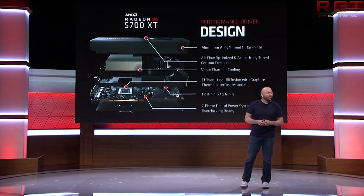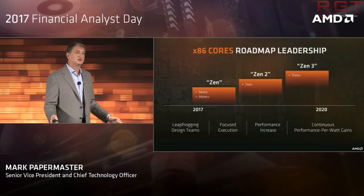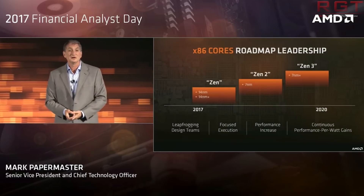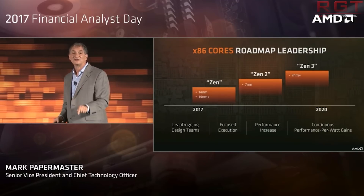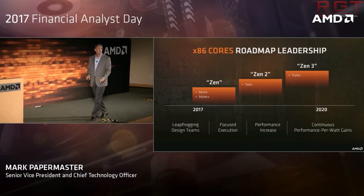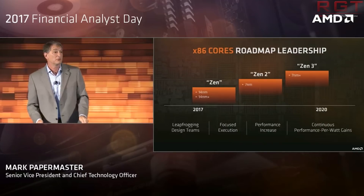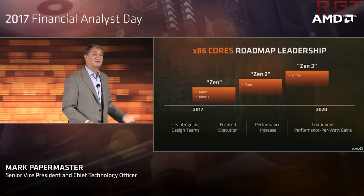Also rather fascinatingly, AMD themselves recently confirmed that the original Zen architecture had a lot of tweaks and enhancements left on the drawing board because they ran out of time. These eventually made their way into subsequent architectures, particularly Zen 2. So perhaps the same could be said for the RDNA architecture as well.